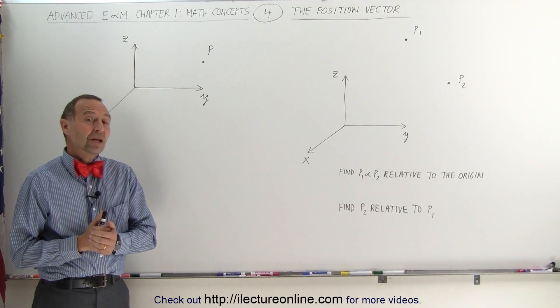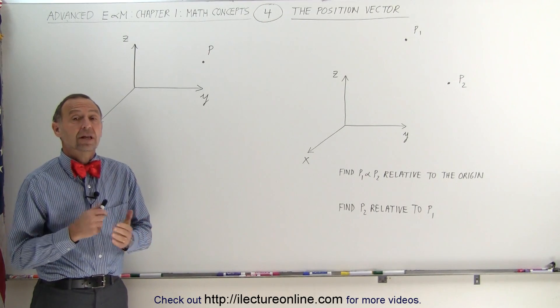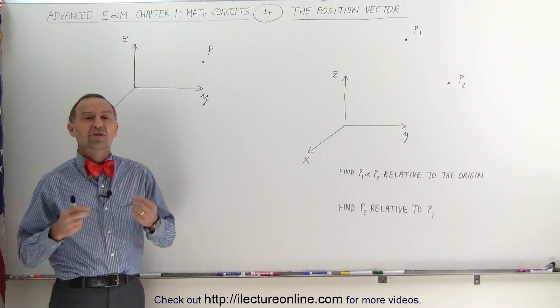Welcome to ILecureOnline. A vector that we often use, especially in electricity magnetism, is called the position vector.